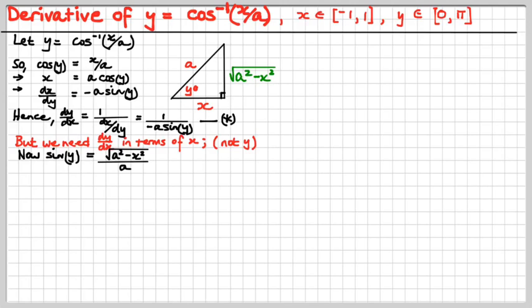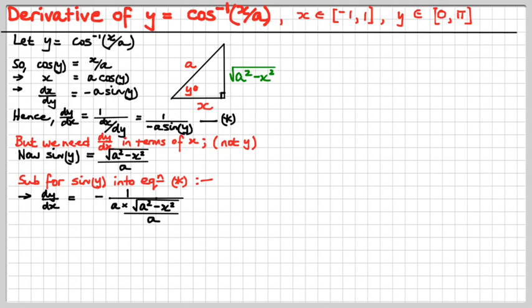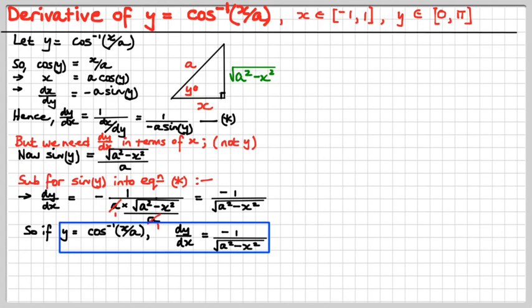We can plug sin y into equation star. We substitute for sin y and get a result — a little cancel-a-rooney happening. And we get this result. It's the same as for inverse sine, except there's a minus 1 instead of just 1 on the numerator. So, if y equals inverse cos of x over a, then dy/dx is minus 1 over the square root of a squared minus x squared.